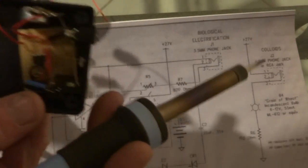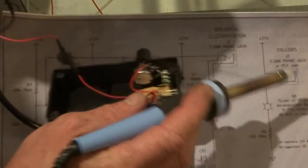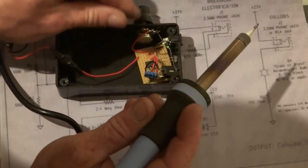So that one there goes on the top, and then the earth wire that comes off of the 9-volt wire that you've made, that goes onto the other side of the switch.